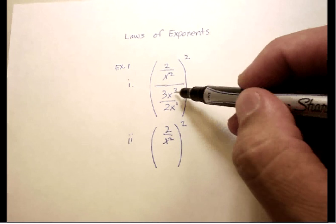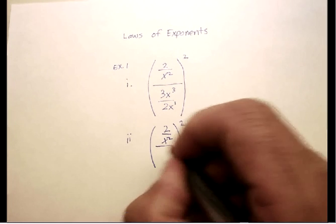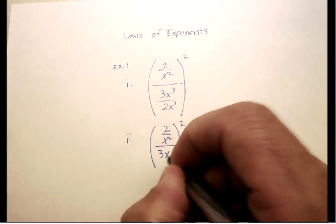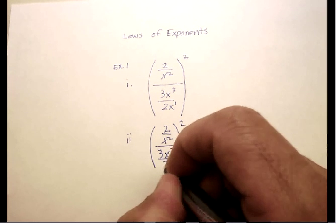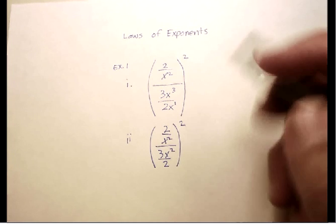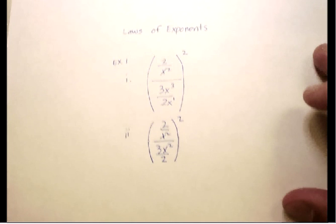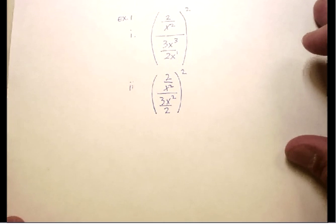I'm going to use the quotient rule and subtract that to get x squared. That gives me 3x squared over 2. So just using the quotient rule, I've simplified the problem a bit. Now let's keep moving. What can I do in this step?